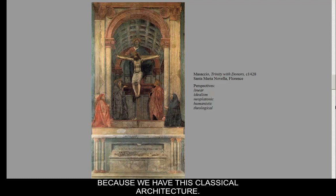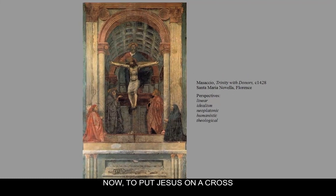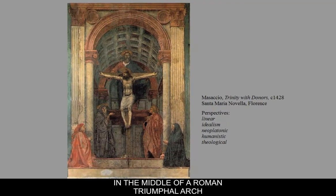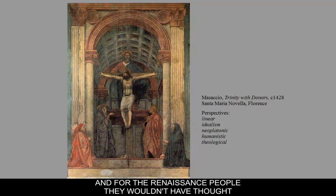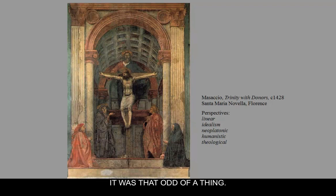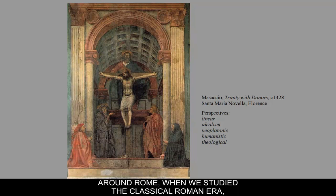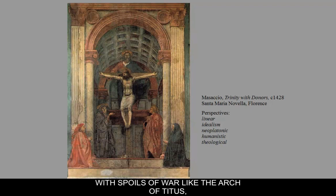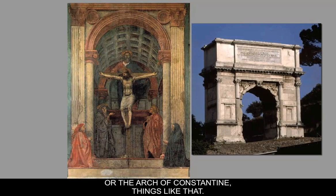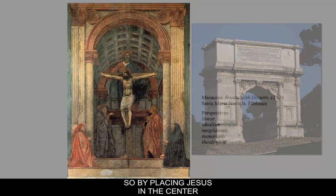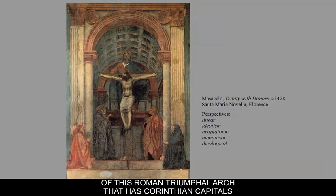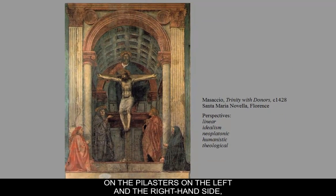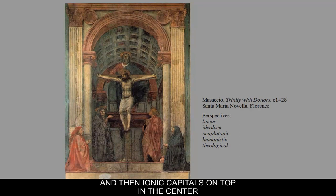The classical architecture we're seeing here is a Roman triumphal arch. To put Jesus on a cross in the middle of a Roman triumphal arch is an unusual thing, though Renaissance people wouldn't have thought it so odd. Triumphal arches were constructed around Rome to announce when an emperor returned with spoils of war — like the Arch of Titus or the Arch of Constantine. By placing Jesus in the center of this arch, with Corinthian capitals on the pilasters and Ionic capitals in the center, we're saying that Jesus is triumphant.